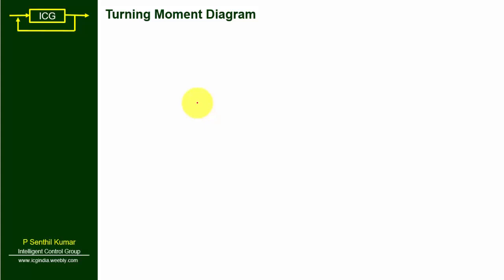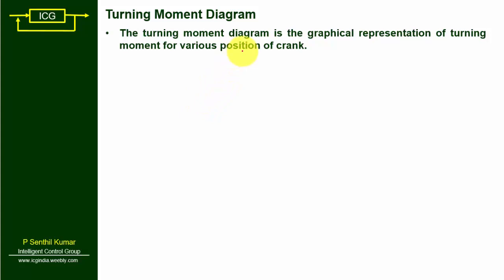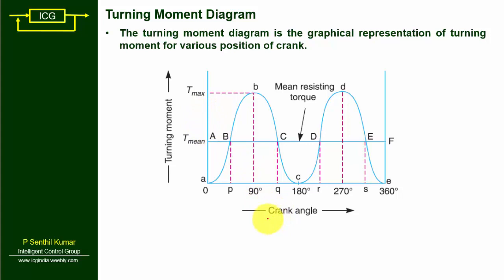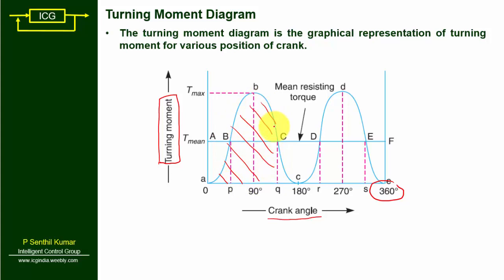A turning moment diagram is a graphical representation of turning moment for various positions of the crank. Consider a turning moment diagram for a steam engine: the x-axis represents crank angle, the y-axis represents turning moment, and the maximum crank angle is 360 degrees. The purpose of the turning moment diagram is not only to represent the various positions of the crank with respect to turning moment, but also to represent the area — the hatched portion represents the area of the turning diagram.